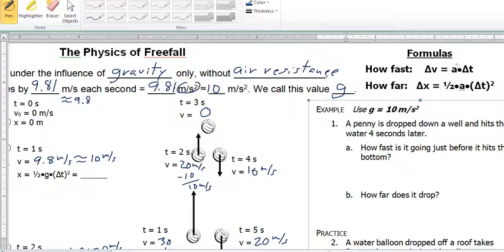So here, this acceleration we're talking about is g. So we can turn that a into a g for gravitational acceleration. Let's take a look at this example.